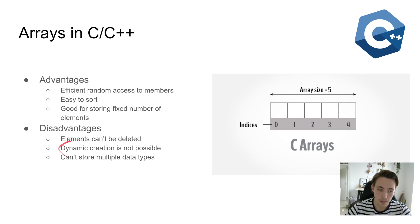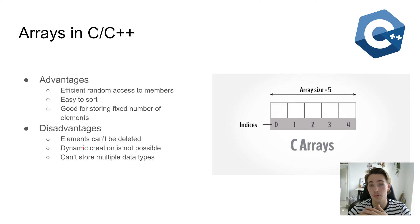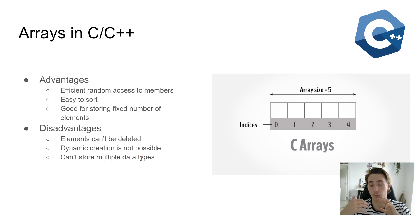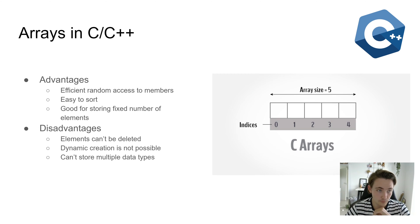Some disadvantages of C arrays: elements can't be deleted once they're assigned an index or position in the array. Dynamic creation is not possible — we can't resize or insert elements. Also, they can only store one data type, so we can't have an integer at one index and a string at another, which is possible in some other data structures.